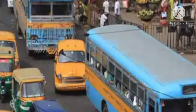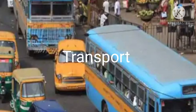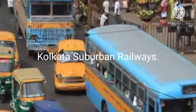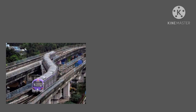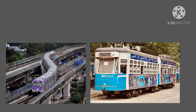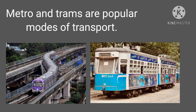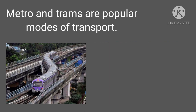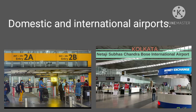Now we will discuss about transport. Public transport is provided by Kolkata Suburban Railways. The popular modes of transport are Metro and Trams. Metro and Trams are popular modes of transport in Kolkata. Kolkata also has domestic and international airports.